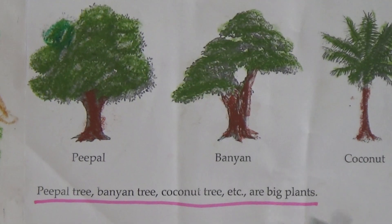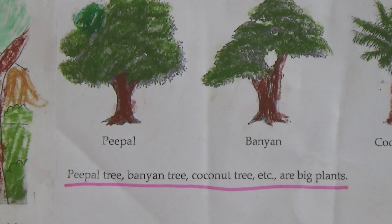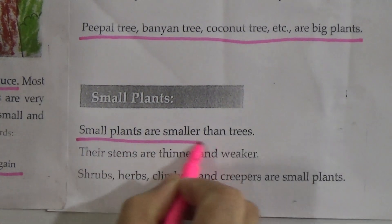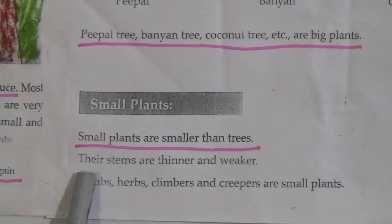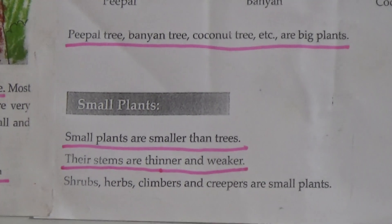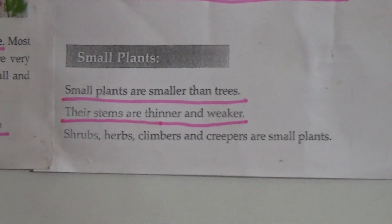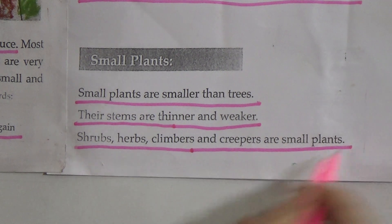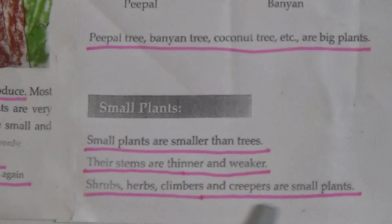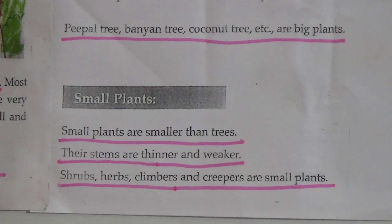Now come to small plants. Small plants are smaller than trees. Their stems are thinner and weaker. Shrubs, herbs, climbers, and creepers are small plants. Memorize this line — this is a very important line: shrubs, herbs, climbers, and creepers are small plants.